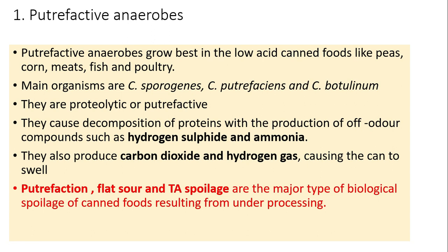Putrefaction, flat sour, and TA spoilage are the major types of biological spoilage. These biological spoilage types in canned foods result from under processing.